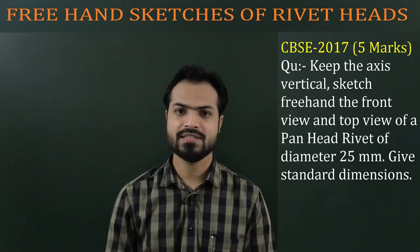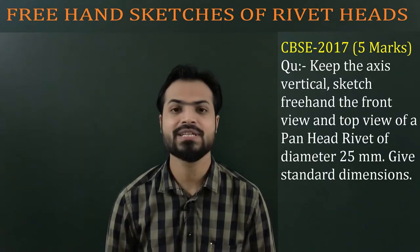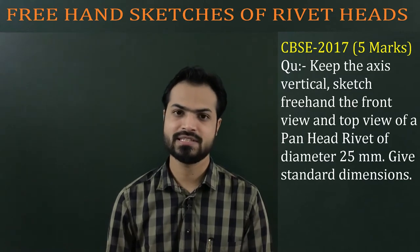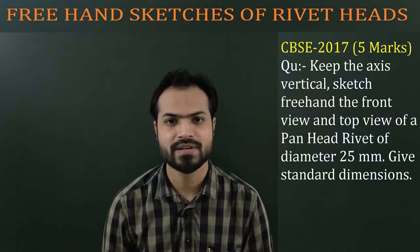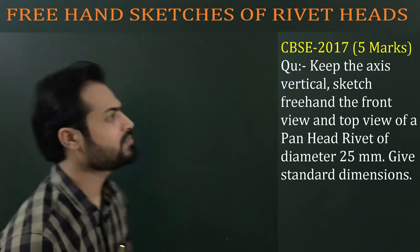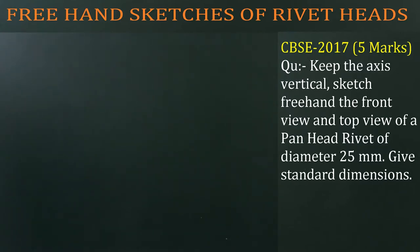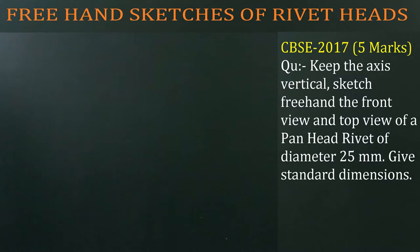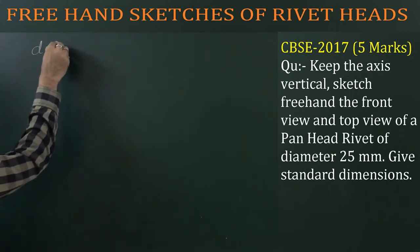Hello everyone. In this series of freehand sketches of machine parts, we are covering rivet heads, and today's topic is pan head rivet. Let's solve a problem from the 2017 question paper. The question was asked for 5 marks in the board examination of class 12th: keep the axis vertical, sketch freehand the front view and top view of a pan head rivet of diameter 25 mm.